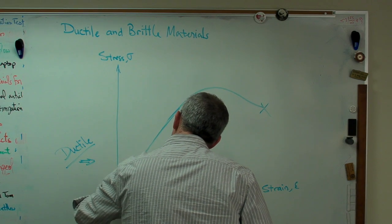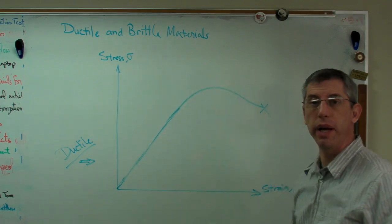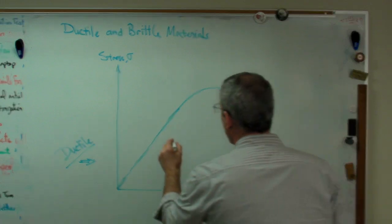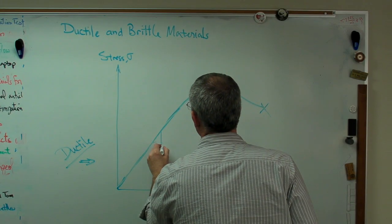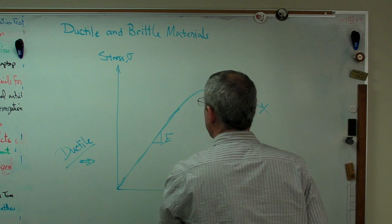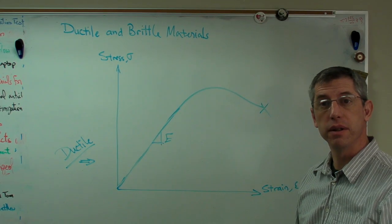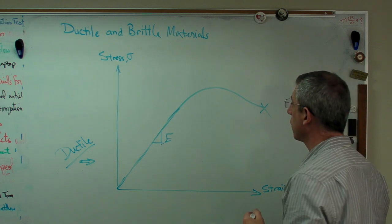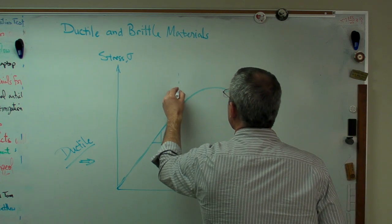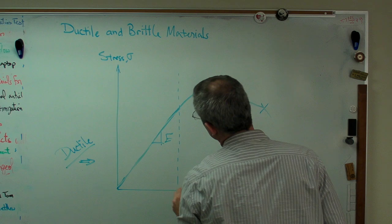Now I didn't draw it very straight, let me clean that up a little bit. Okay, that's a straight line. The slope of that line is E, the elastic modulus for the material. E is kind of like a stiffness, it's a material stiffness.